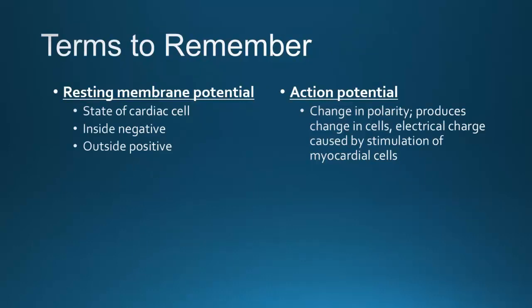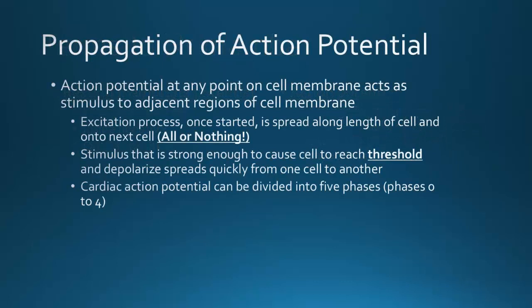More important terms: Membrane potential — the resting membrane potential is the resting or polarized state of the cell, where the inside is negative and the outside is positive. In order for an action potential to occur, you've got to have a change in polarity producing a change in electrical charge caused by stimulation of myocardial cells. The action potential at any point on the cell membrane acts as a stimulus to adjacent regions. A stimulus is required unless the cell undergoes automaticity.